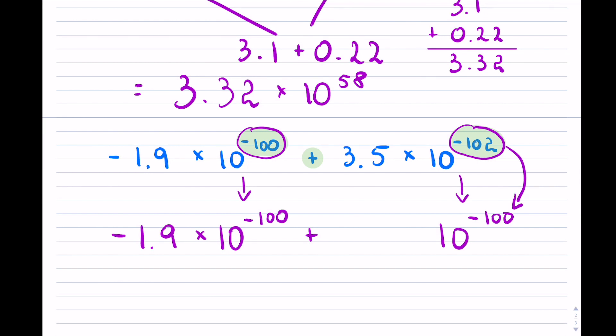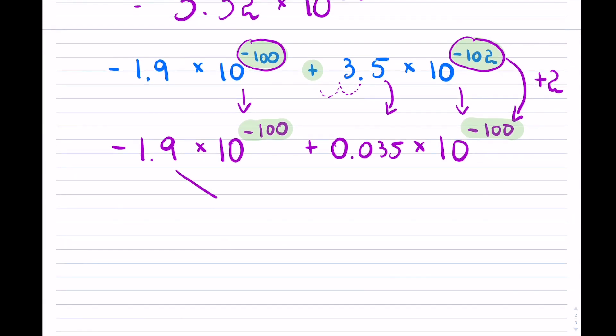That means I had to make it bigger by 2, and therefore this will get smaller by 2. I'm going to have to shift the decimal over two places to make it smaller. Now the exponents are the same, and I can go ahead and work with the leading numbers, which means I have the following to do.